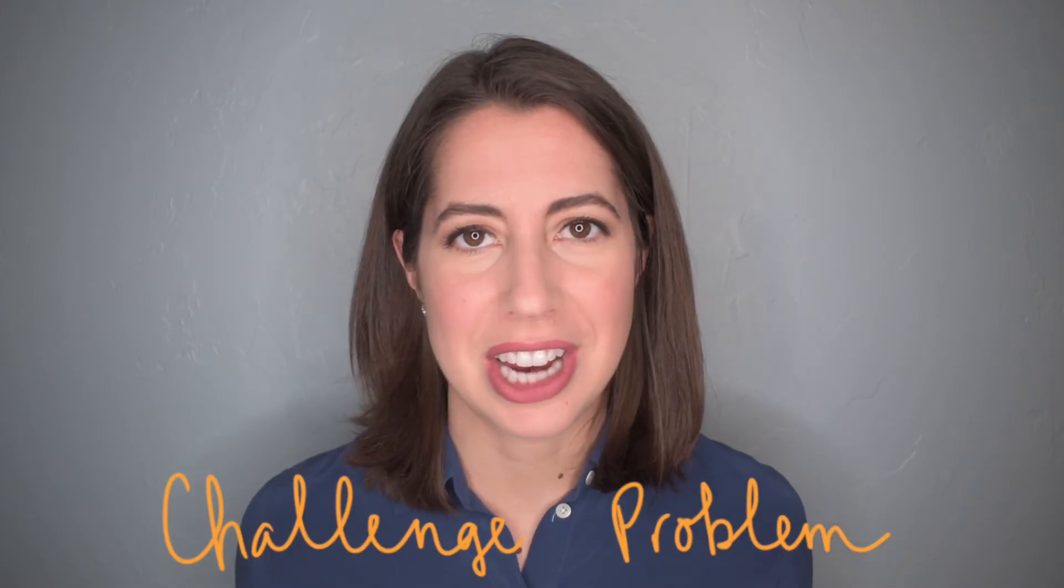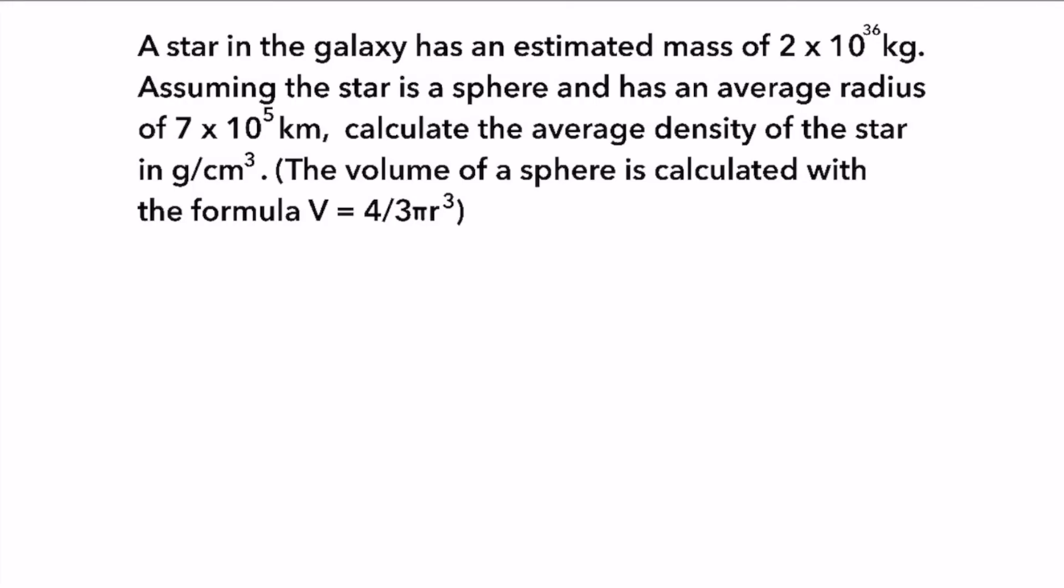All right everyone, congrats on making it this far. To give those brain muscles one final push, let's try this challenge problem. A star in the galaxy has an estimated mass of 2 times 10 to the 36 kilograms. Assuming the star is a sphere and has an average radius of 7 times 10 to the 5th kilometers, calculate the average density of the star in grams per cubic centimeter. The volume of a sphere is calculated with the formula volume equals 4 thirds pi r cubed.